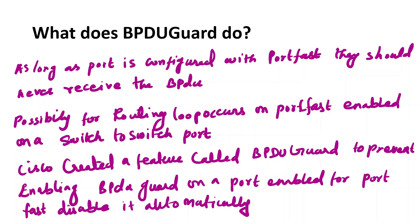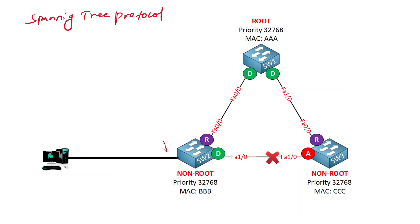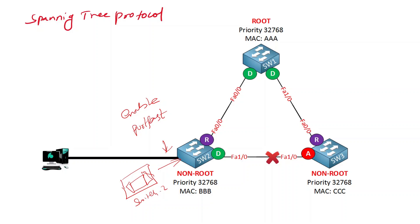Next is BPDU Guard. When PortFast is enabled on a port, if someone incorrectly connects a new switch to that port, the new switch will send BPDUs. To avoid this wrong configuration introducing a new switch into the topology, we use the feature called BPDU Guard.